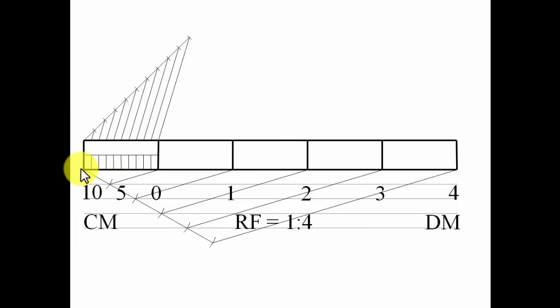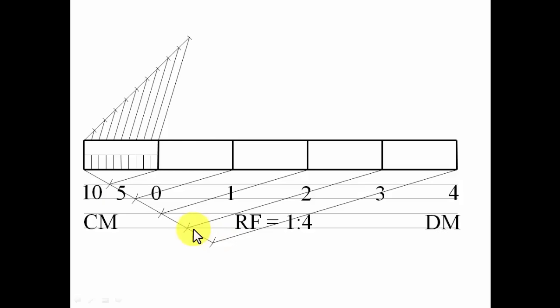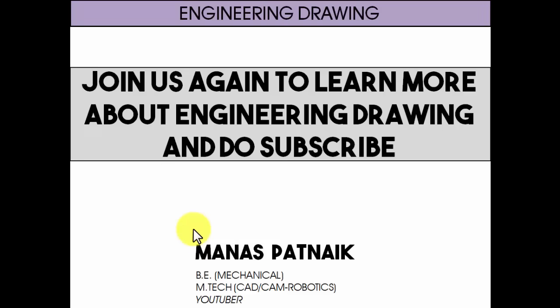This is exactly what you call a plain scale. For the color code: wherever you see dark and thick lines or numbers and alphabets, use an H pencil. For the lighter, thinner construction lines, use a 4H pencil. This is the color code to use when preparing this construction on a drawing sheet or plain sheet of paper.